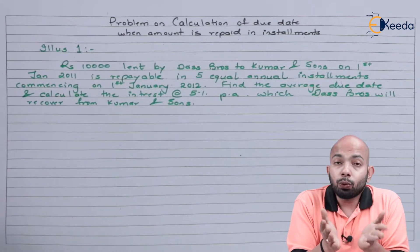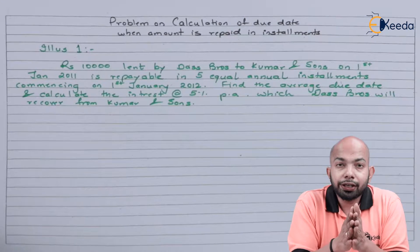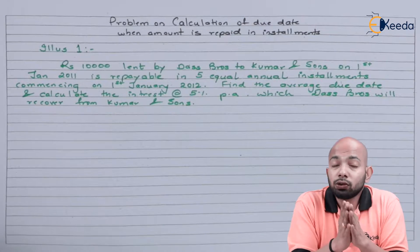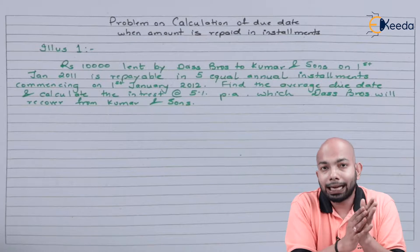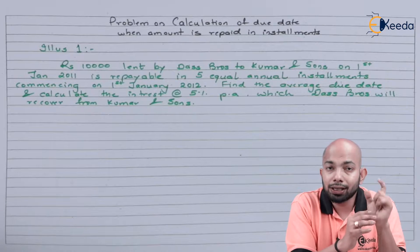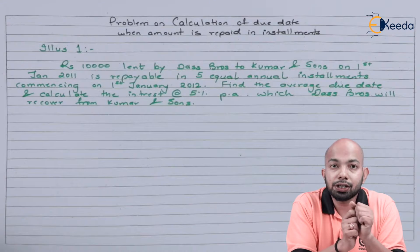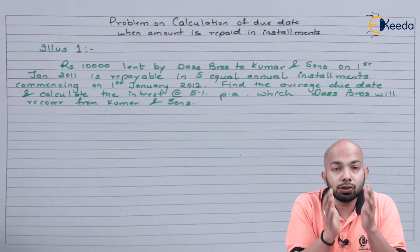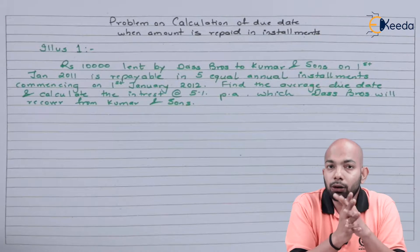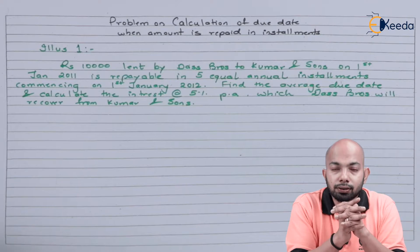The question has two basic things that have to be calculated: first, the average due date, and second, the interest. Let's read out the question first.